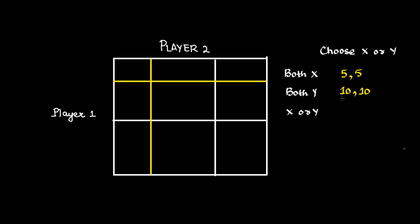If one chooses X and another chooses Y, then the person who chooses X will get 20 and the person who chooses Y will get 0.